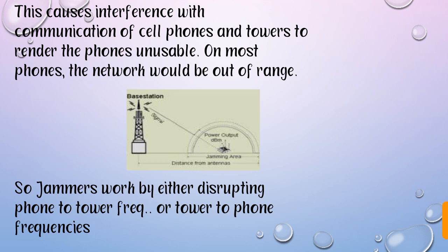In the figure, this is a base station. You can see the base station and this is the jamming area. This is the distance from the antennas and this is the power output — you can see it all in the figure. You can clearly see these signals are disrupted. Jammers work by either disrupting the phone-to-tower frequency or the tower-to-phone frequency.